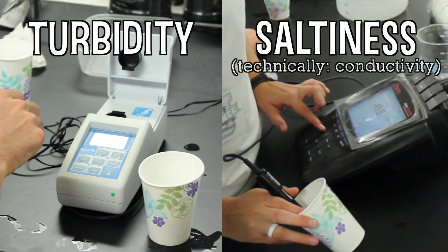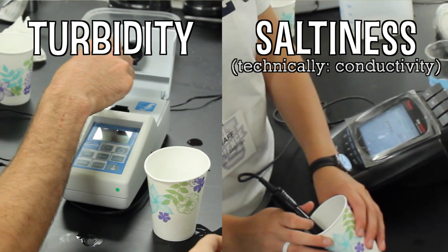The kids are using two criteria to measure how clean and filtered their water became. Saltiness and turbidity, which is essentially how cloudy the water looks. The goal is to have the lowest turbidity and saltiness and to have your water look the clearest. That, of course, is a bit more subjective,